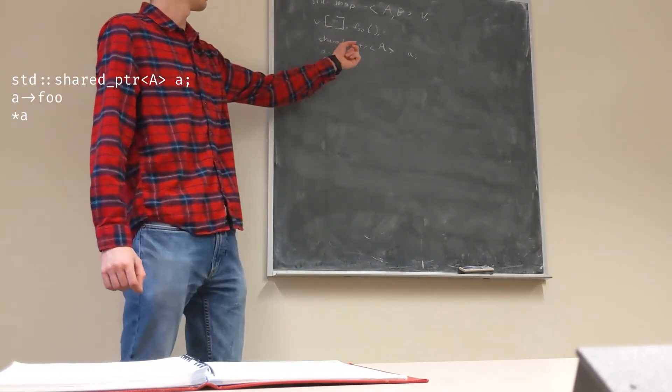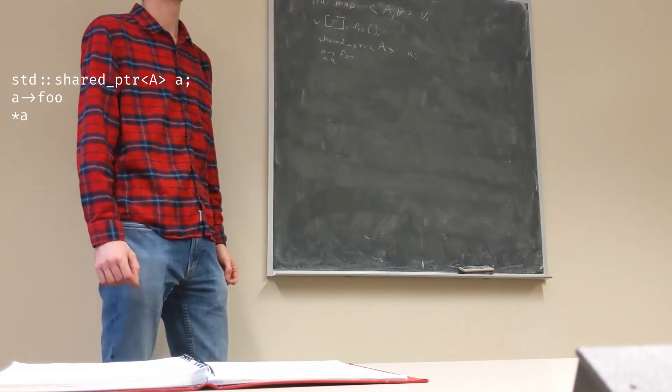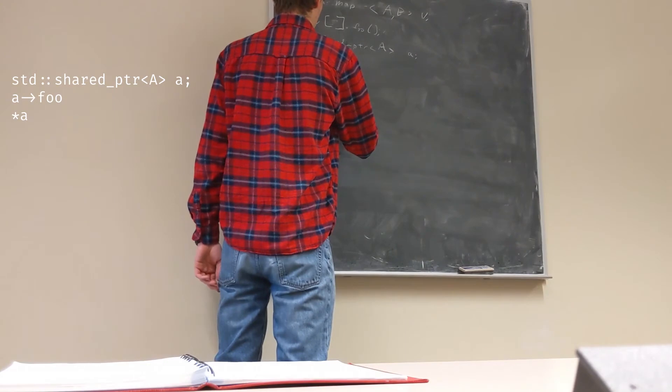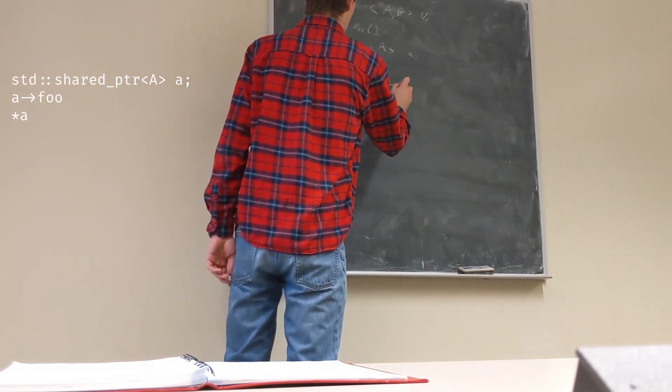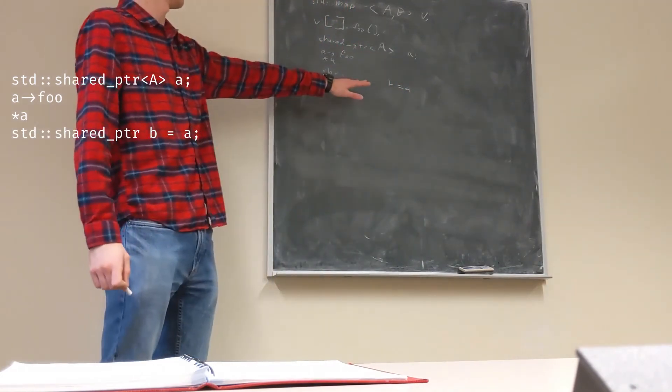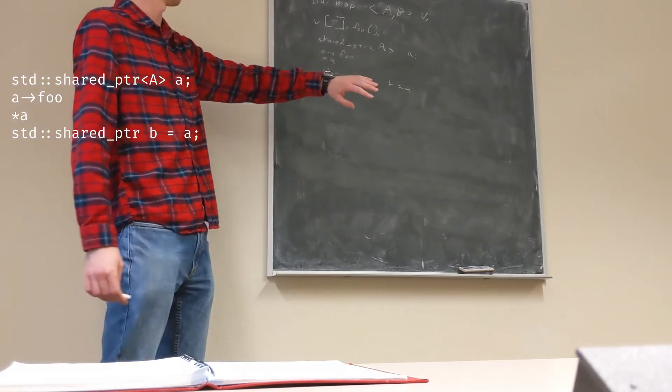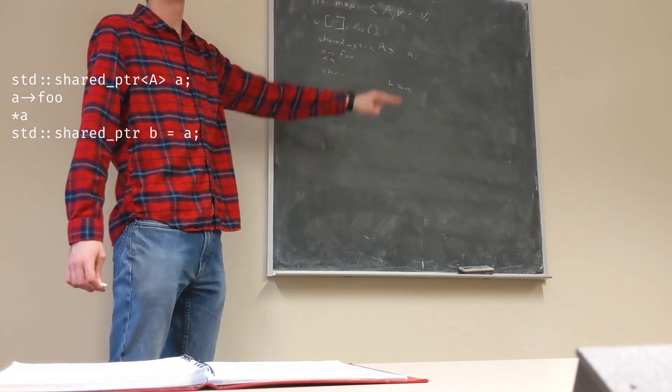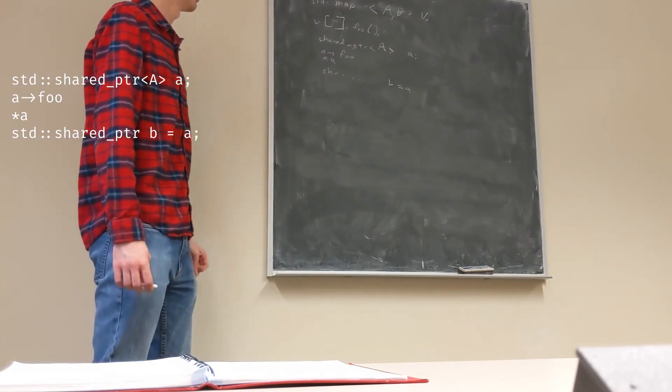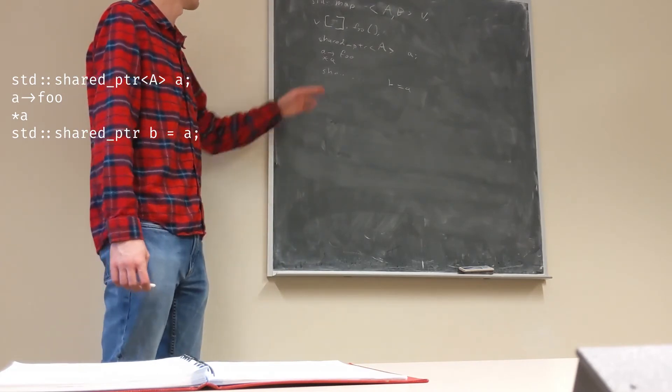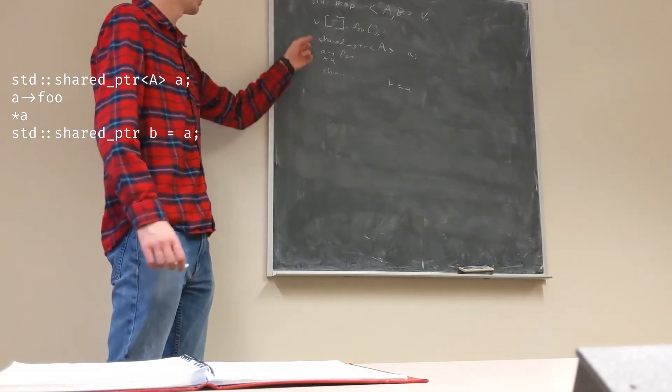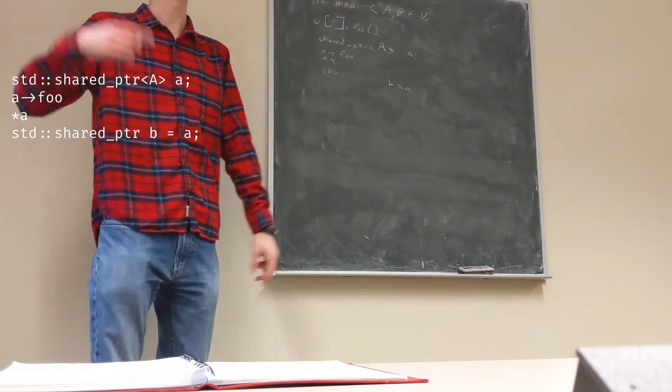But when you make a copy, when you make a copy of that pointer, so for example, if you do, like, shared, the whole thing, B equals A. And I think next time I'm going to go more into what happens when you make a copy of an object. When you make a copy of that, it has an internal reference counter. So it keeps track of how many copies of that shared pointer there are, and it increments it.